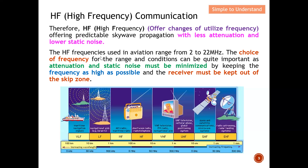The HF frequency used in avionics ranges from 2 to 22 megahertz. The choice of frequency for the range and condition can be quite important as attenuation and static noise must be minimized — we minimize by keeping the frequency as high as possible. We also need to ensure the receiver is kept out of the skip zone. Adjusting frequency in this range makes the choice crucial.